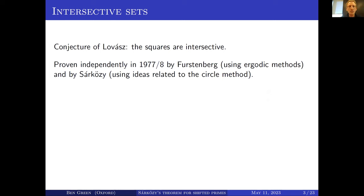Let me remind you what it means that the squares are intersective: if you take a set A of natural numbers of positive upper density, there will be some two of them that differ by a non-zero square.